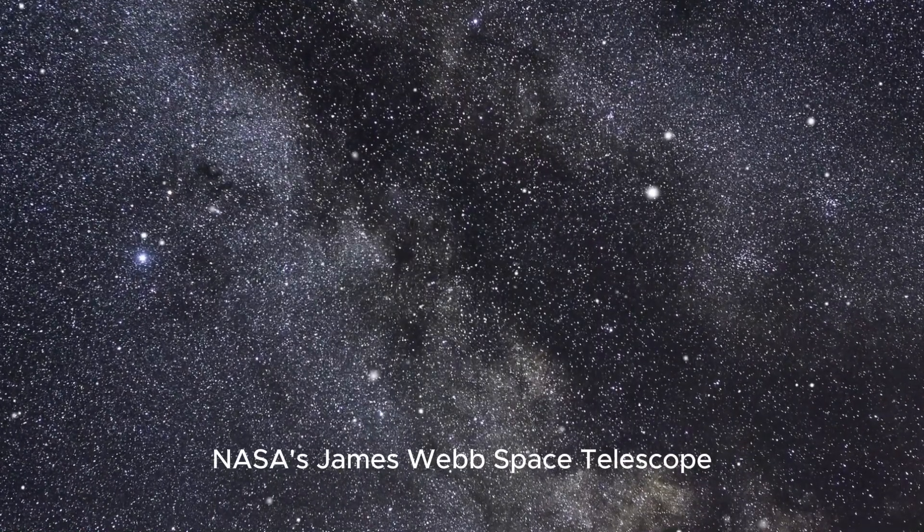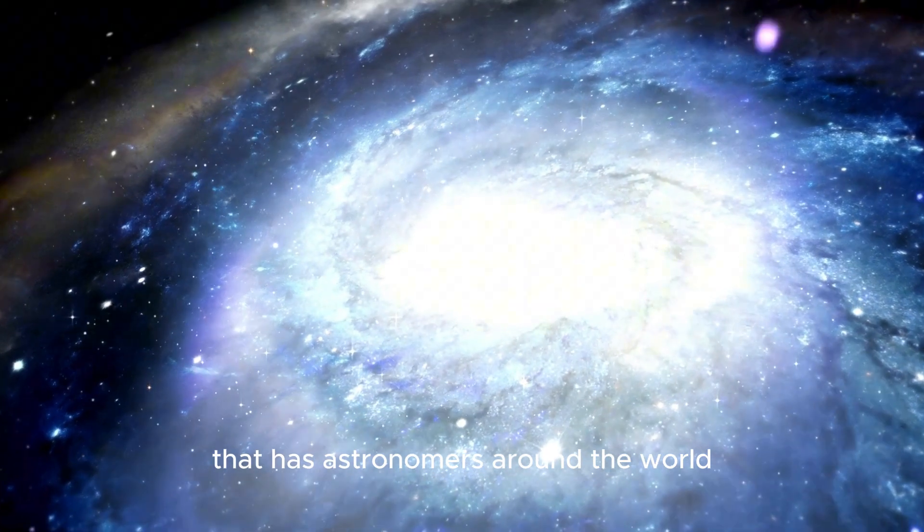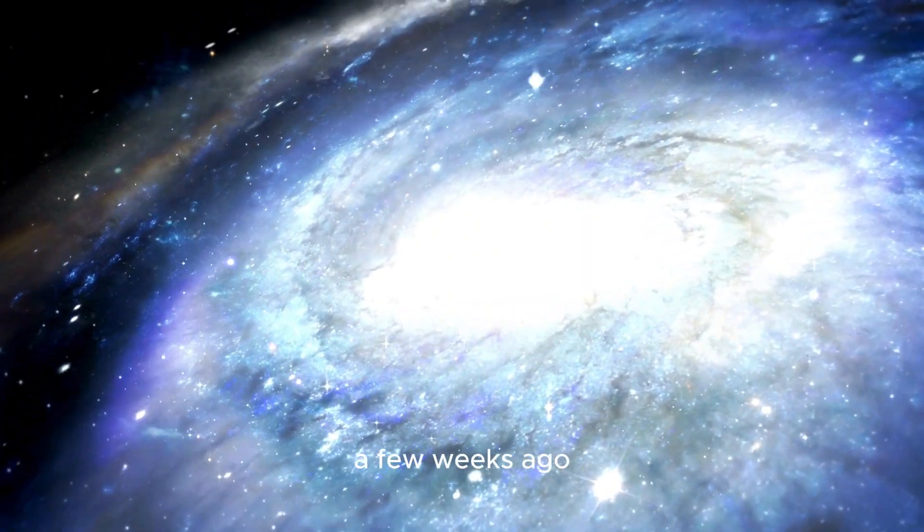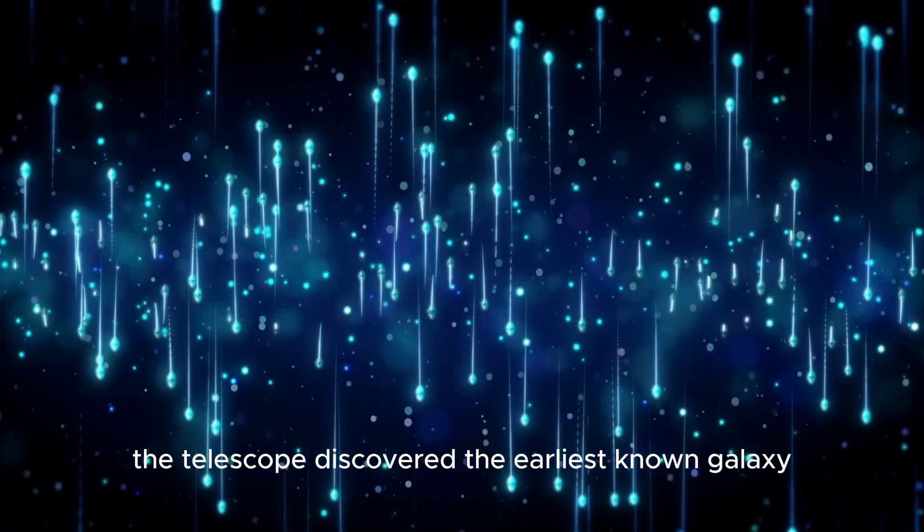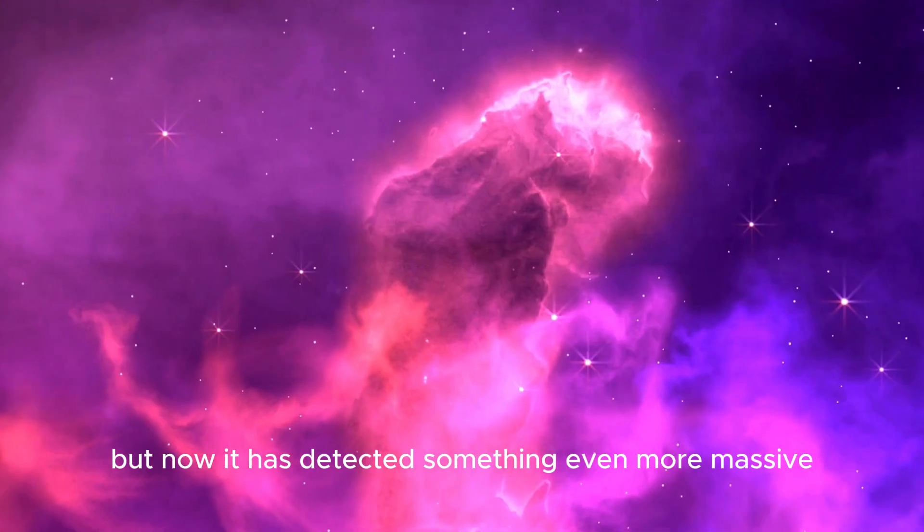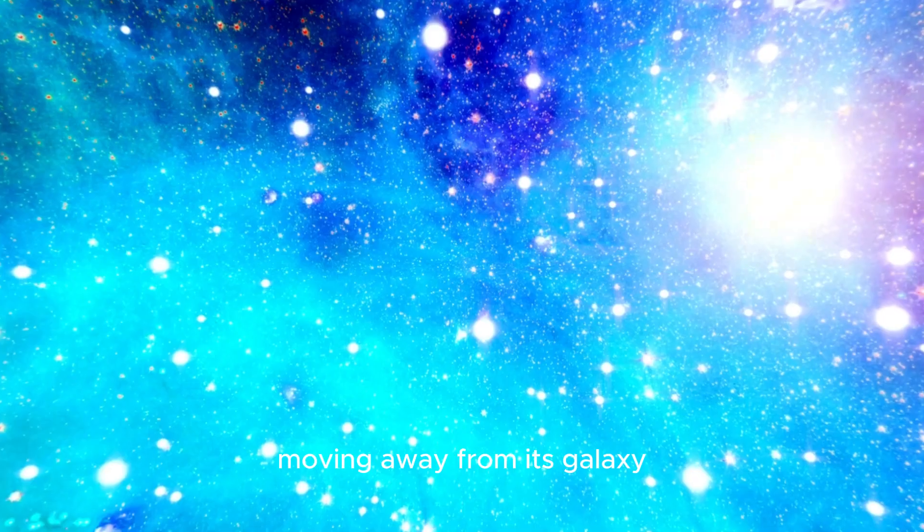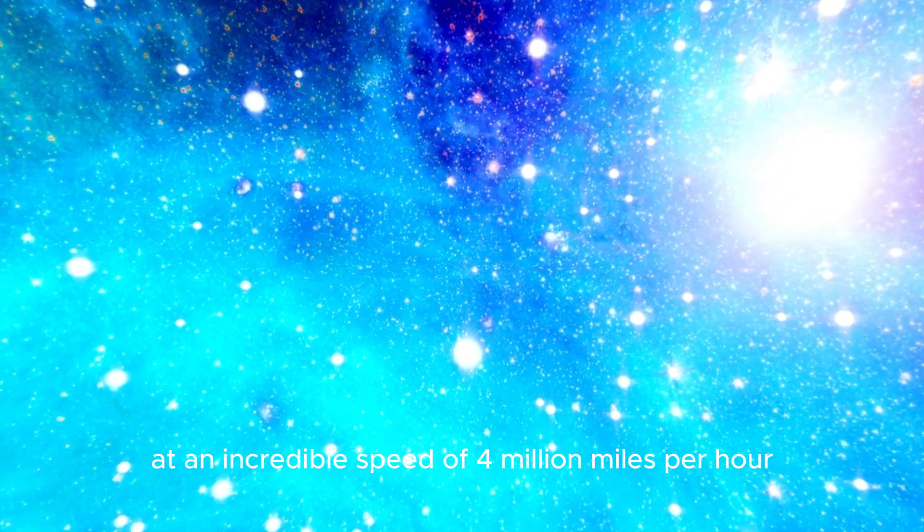In a surprising turn of events, NASA's James Webb Space Telescope has made a discovery that has astronomers around the world in awe. A few weeks ago, the telescope discovered the earliest known galaxy in the universe, but now it has detected something even more massive, a supermassive black hole moving away from its galaxy at an incredible speed of 4 million miles per hour.